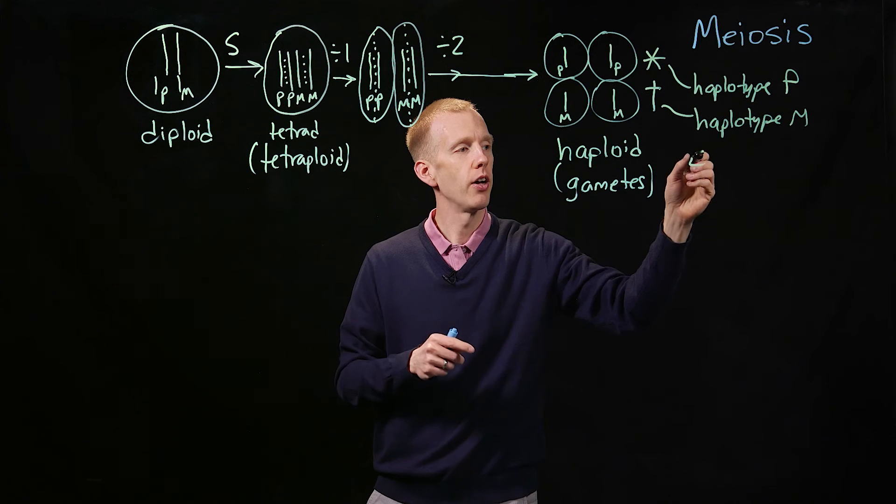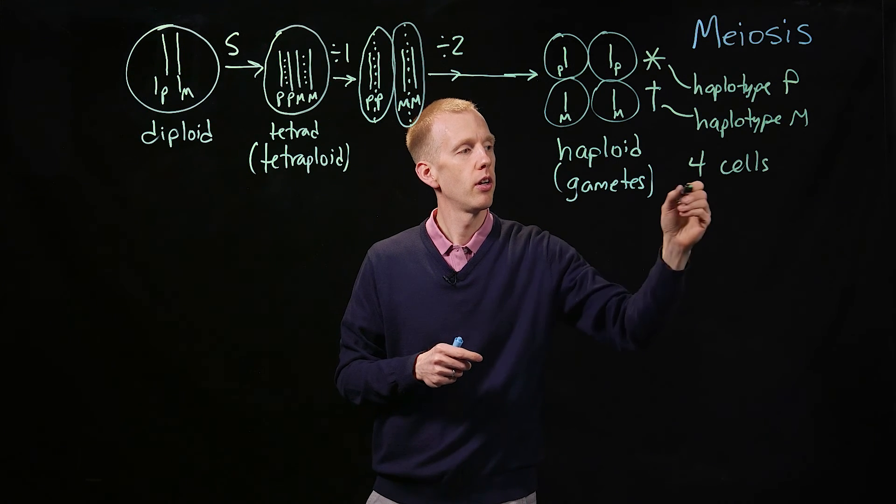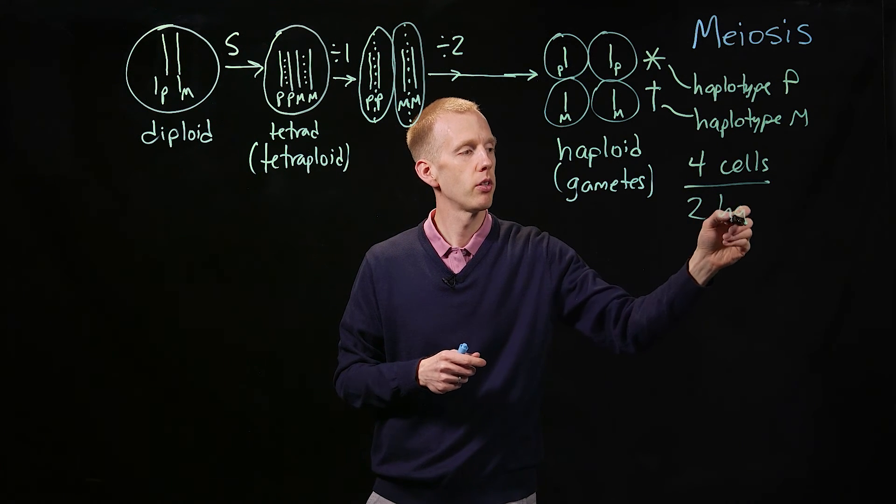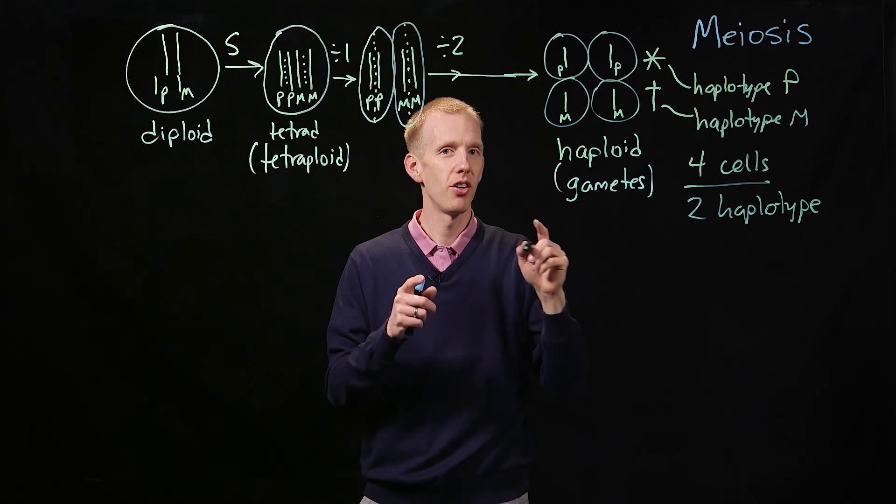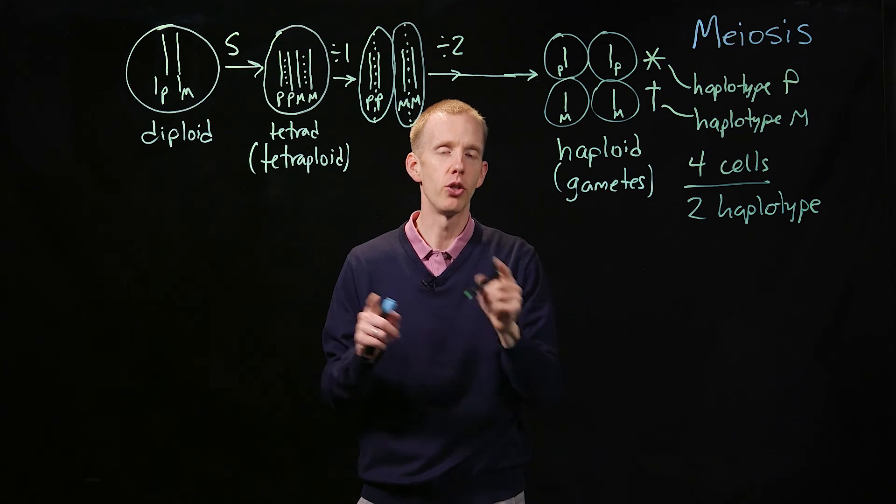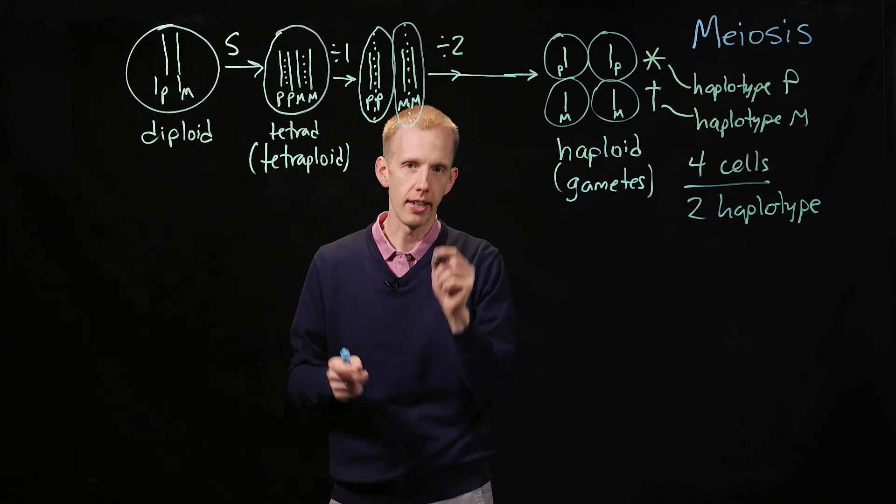So if you have four cells, and if you have two haplotypes, you do the math. That means that there are going to be two cells that have one haplotype, and two cells that have the other, guaranteed.